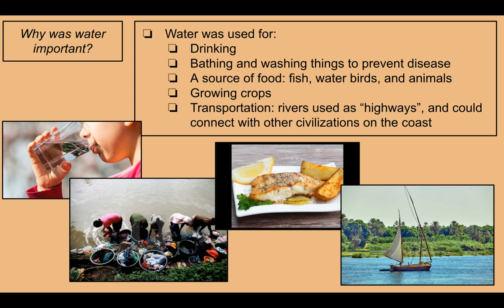Rivers were used as highways and could connect civilizations on the coast. Think of rivers as kind of like the modern-day freeways or roads. Pictures here show drinking water, washing clothes, some kind of fish — looks tasty — and a boat that you would have seen in ancient Egypt.